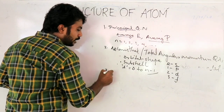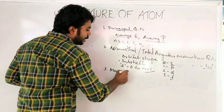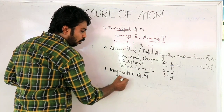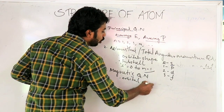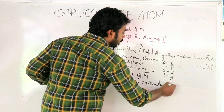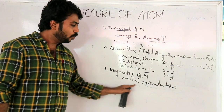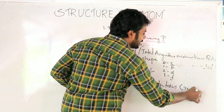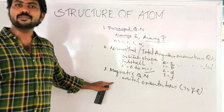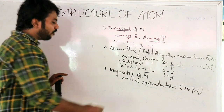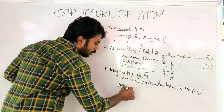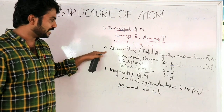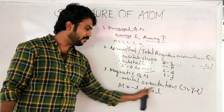The third is the Magnetic quantum number. It represents the orbital orientation along the X, Y, and Z axes. The value of m is equal to minus L to plus L.